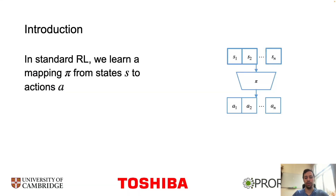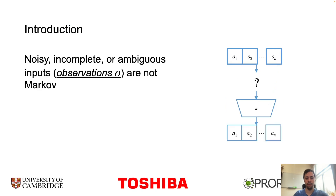In standard model-free reinforcement learning, we generally learn a mapping pi from Markov states s to actions a. However, the standard reinforcement learning approach only works when we have access to the Markov states. In most realistic applications, the states that we get from the environment are imperfect — they may have sensor noise or they may be missing information. If this is the case, we call these imperfect states observations, denoted by O. Reinforcement learning requires the states to be Markov, so what do we do?